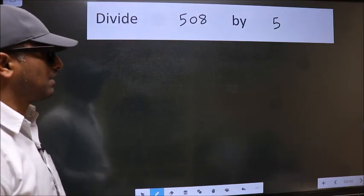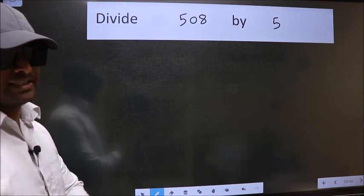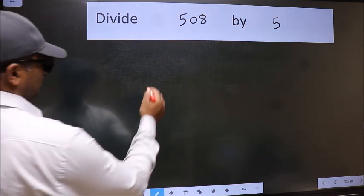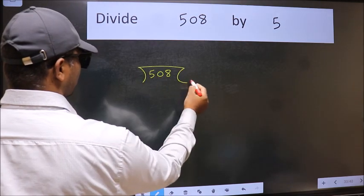Divide 508 by 5. To do this division, we should frame it in this way: 508 and 5 here.